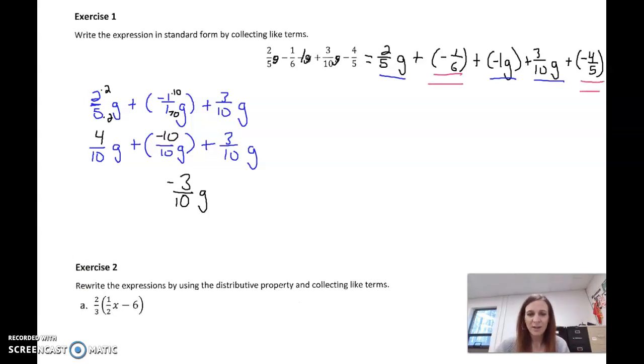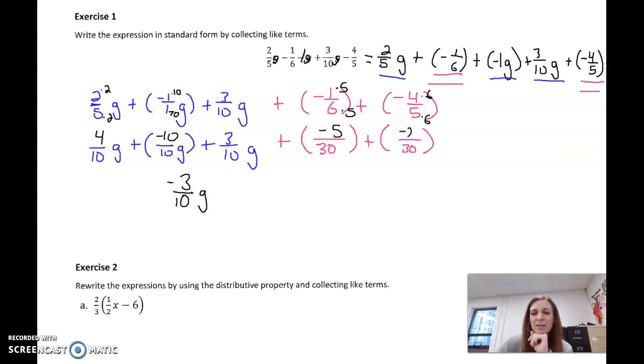Now I have these two constants here. So I'm going to have a negative one-sixth plus a negative four-fifths, and we're going to need a common denominator for those two. I think 6 and 5, the smallest thing they go into is 30. So what do I do to 6 to get 30? I times it by 5. So negative 1 times 5 is a negative 5. And 5 times 6 is 30. So negative 4 times 6 is a negative 24.